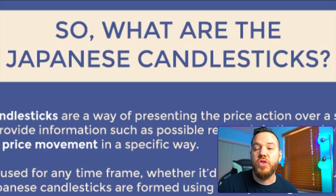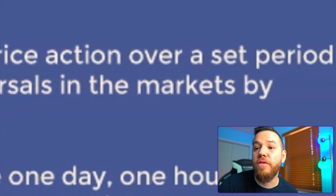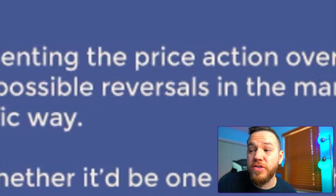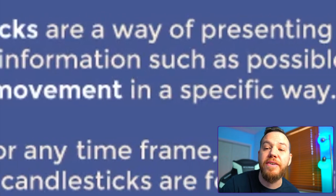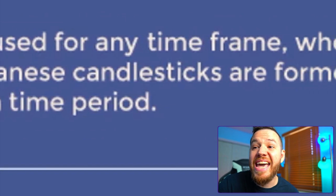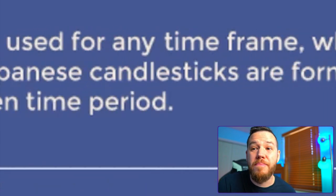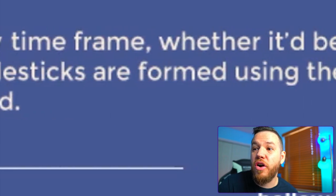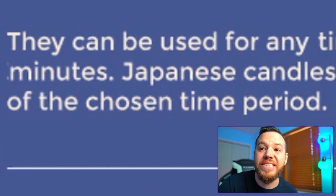So what are Japanese candlesticks? Japanese candlesticks are a way of presenting the price action over a set period of time. They provide information such as possible reversals in the market by showing the price movement in a specific way. They can be used in any time frame, whether it be one day, one hour, or 30 minutes — it really doesn't matter. Japanese candlesticks are formed using the open, high, low, and close of the chosen time period.